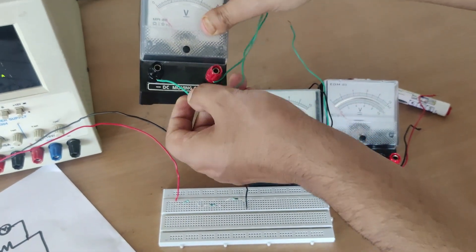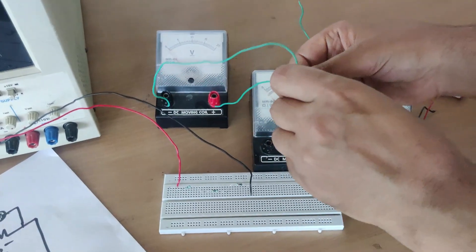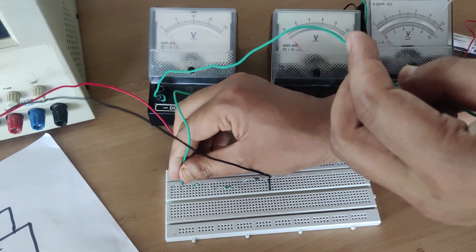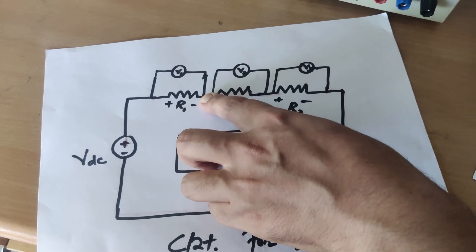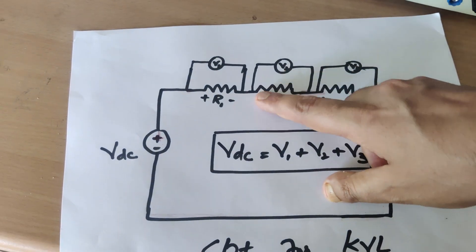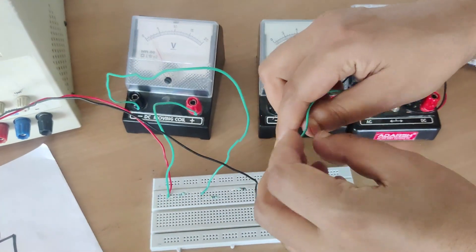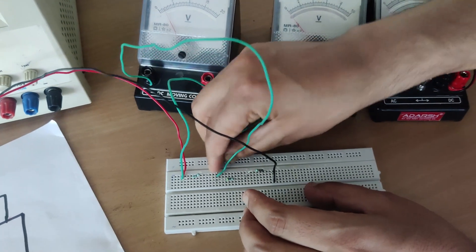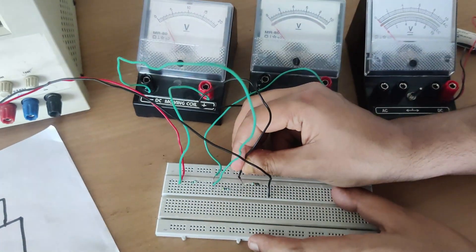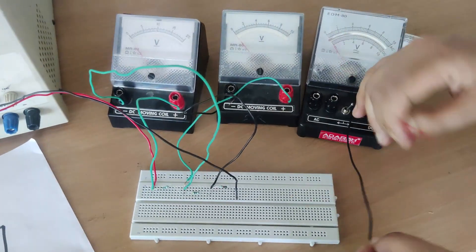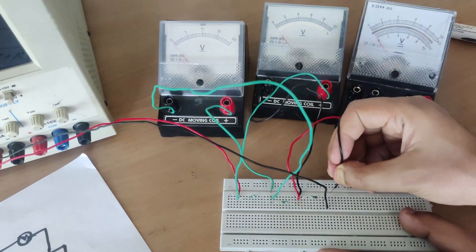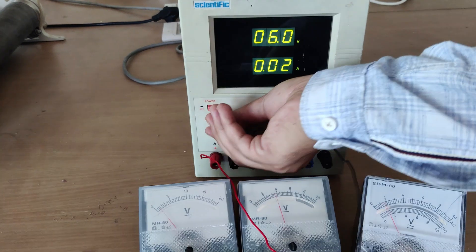The voltmeter has two terminals — positive and negative. I will connect V1 across R1 with the positive terminal on one side and the negative on the other. Now I connect V2 across R2 — the positive terminal here — so this voltmeter will give me the voltage drop across R2. Finally, I connect V3 across R3 — positive terminal here and negative terminal here. Our circuit is now complete.